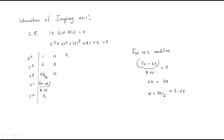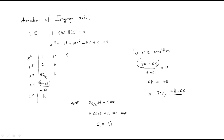Using this K value, we form the auxiliary equation from the s^2 row: 8.66 s^2 plus K equals zero. Substituting K equals 11.66 and solving, we get s1 equals plus j1.15 and s2 equals minus j1.15.